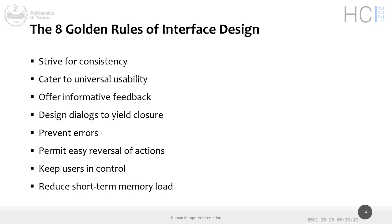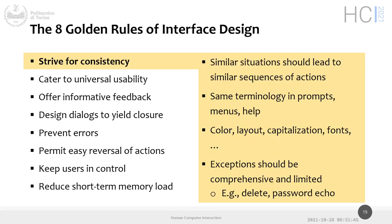In the literature we find these eight golden rules of interface design. They are called golden rules and fall into what we call principles. They are already practical — we can check whether they are satisfied or not. Of course, they are not at the level of guidelines, so they don't apply to a specific technology; they apply to basically all of them. The first one, and my favorite, is striving for consistency.